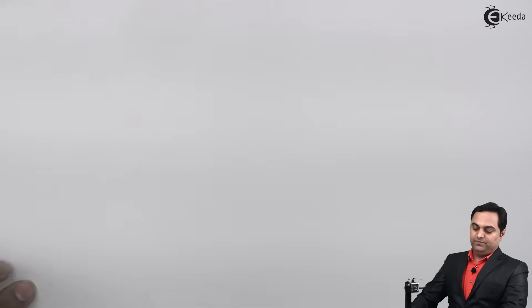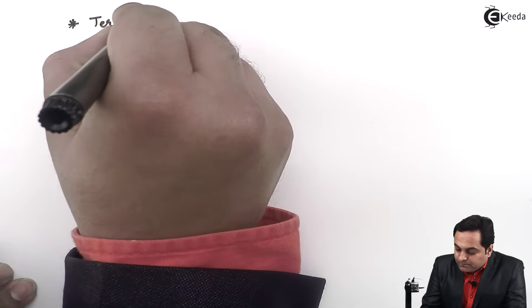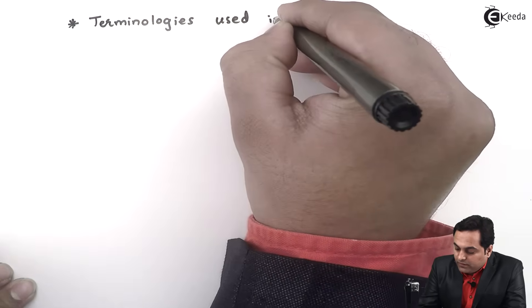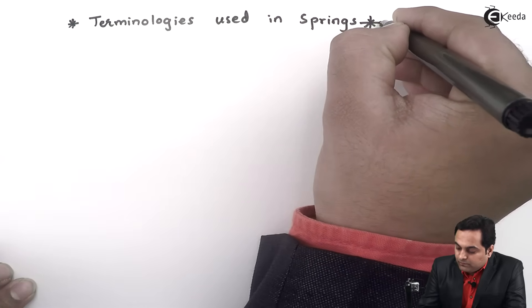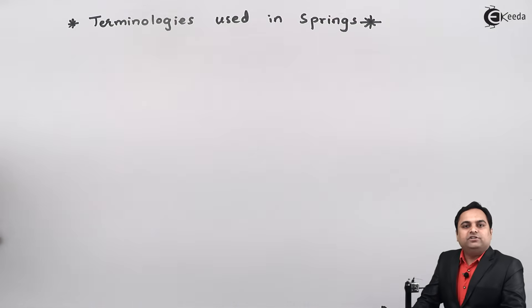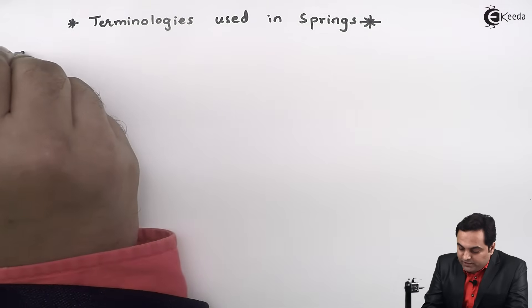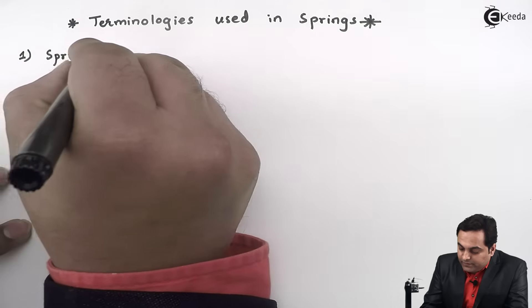Hello friends, in this video we will see some of the common terms which are there in springs. Those terms are called terminologies used in springs. Here I will mention some of the terms which are used in springs frequently. The first one is spring index.